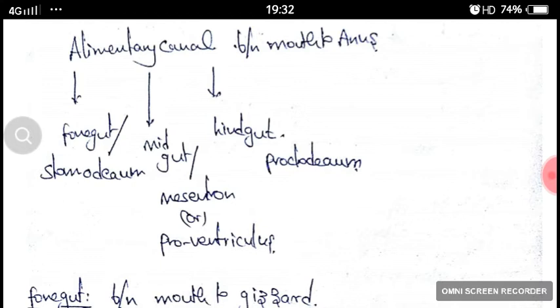The foregut is also called stomadium. The midgut is also called mesentron or proventriculus. The hindgut is also called proctodeum.